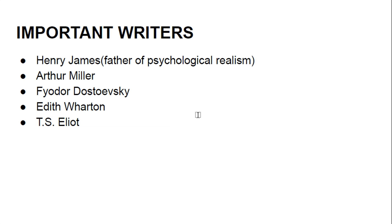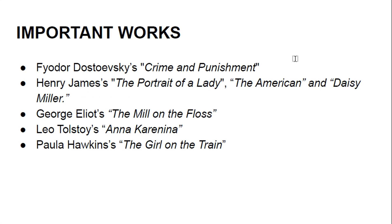Moving towards the important writers who employed psychological realism in their works: Henry James, Arthur Miller, Fyodor Dostoevsky, George Eliot's 'The Mill on the Floss,' Leo Tolstoy's 'Anna Karenina,' and Paula Hawkins' 'The Girl on the Train.'